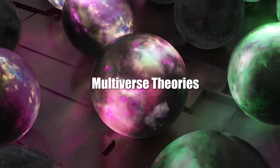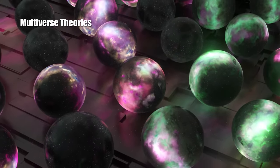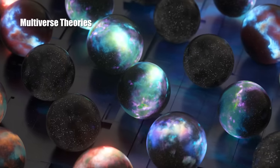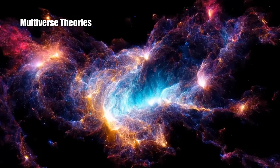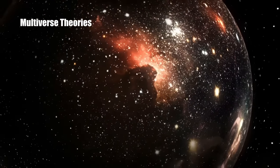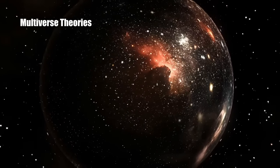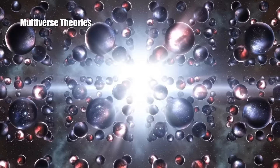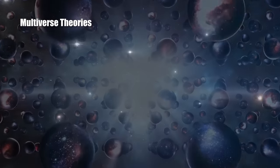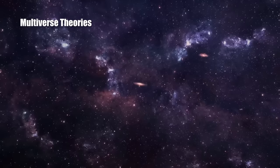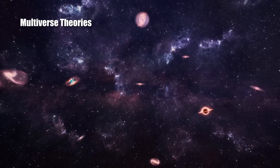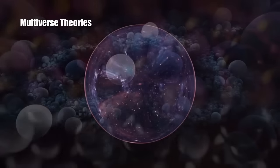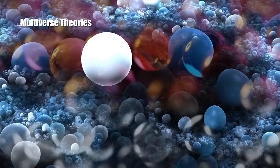Advocates of multiverse theories propose the idea that our universe is just one of countless others in a vast multiverse. They suggest that beyond our cosmic horizon, there could be an infinite number of universes, each with its own laws of physics, histories and configurations. According to these theories, what we perceive as our universe might merely be a small part of a much larger ensemble of universes, some of which could be vastly different from our own, while others might be strikingly similar. This concept opens up possibilities for explaining certain cosmic mysteries by suggesting that different universes in the multiverse can have different properties. For instance, it might help understand why the physical constants in our universe are finely tuned for life, proposing that we simply live in one of the many universes where conditions just happen to be right for life as we know it.